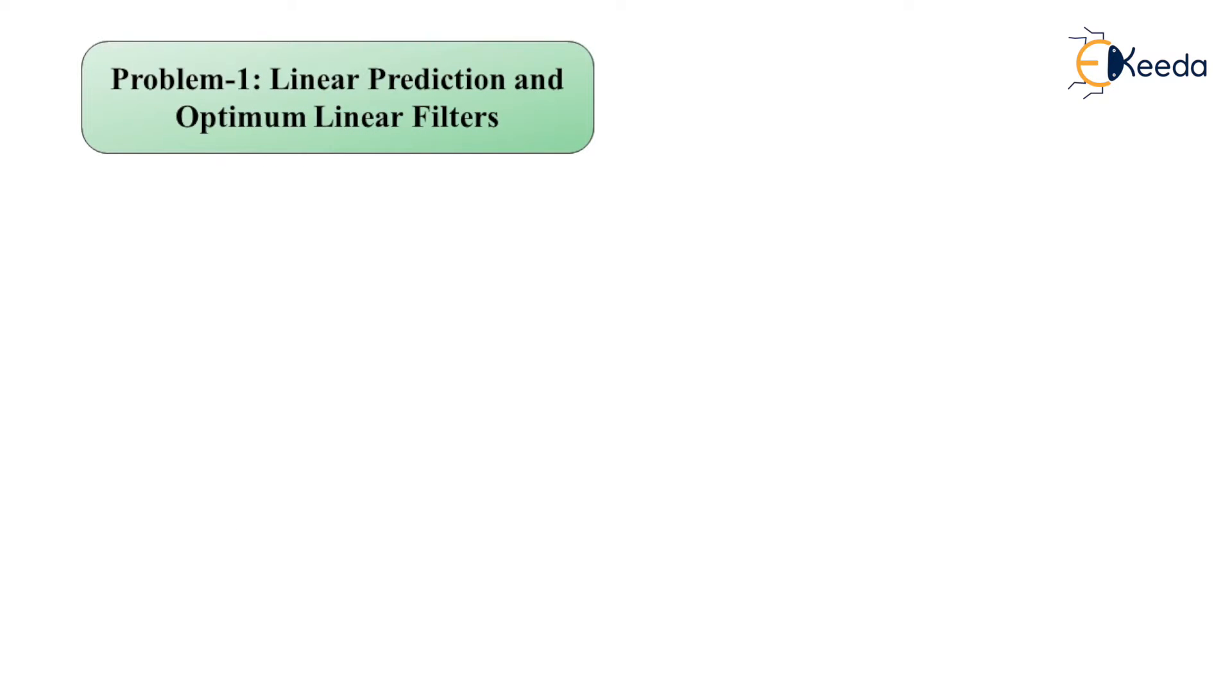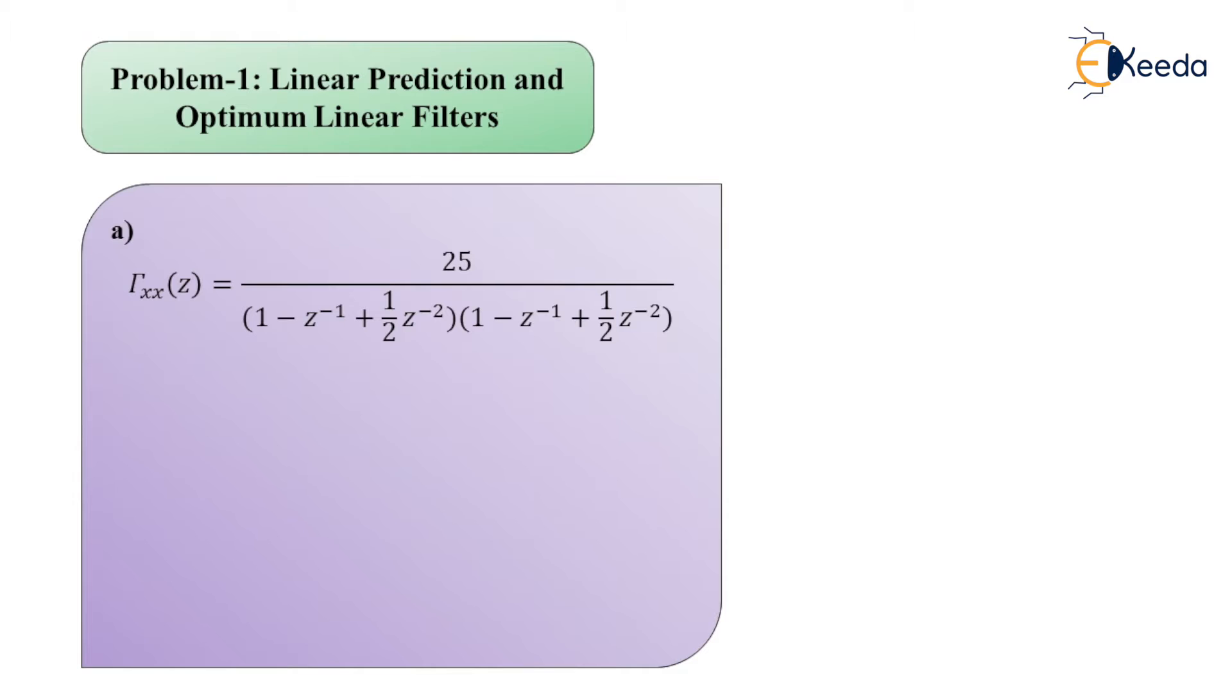So in part A, we require to determine the difference equation for generating the AR process with the input to be of white noise type. Here we have the expression for the power spectral density gamma_xx(z) equals 25 divided by, in the denominator, (1 - z^(-1) + 1/2 z^(-2)) multiplied by (1 - z^(-1) + 1/2 z^(-2)).